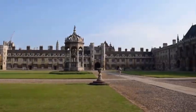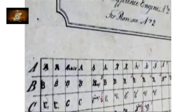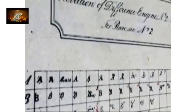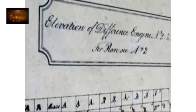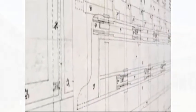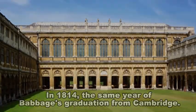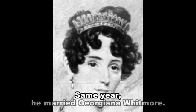In 1810, he entered Trinity College at Cambridge University. There he found that he knew more about mathematics than his instructors. In 1814, the same year of Babbage's graduation from Cambridge, he married Georgiana Whitmore.